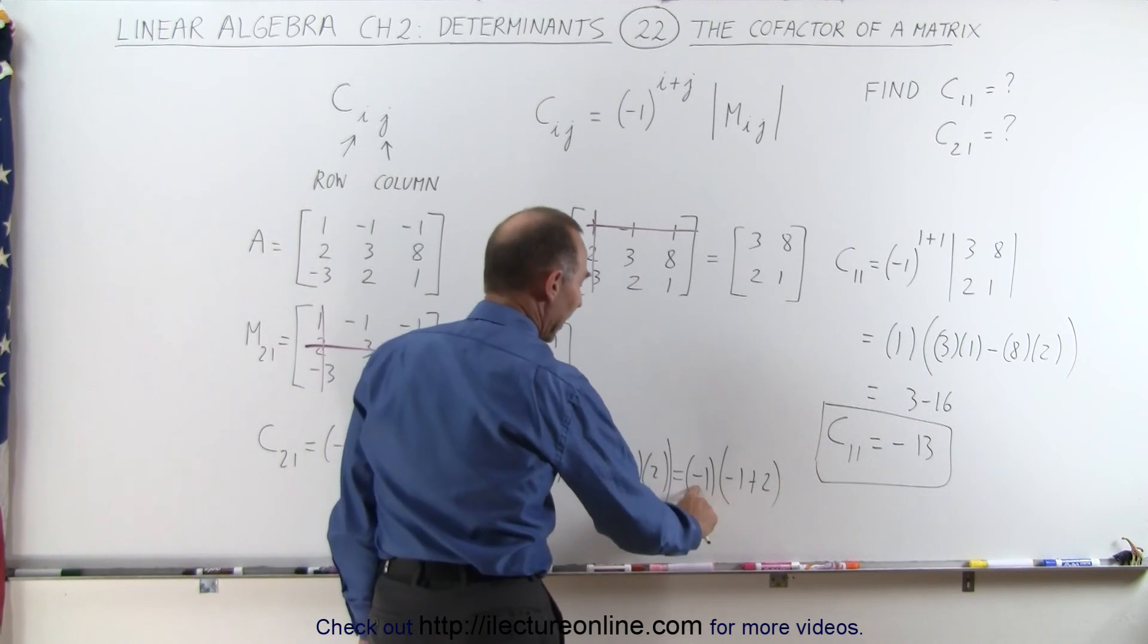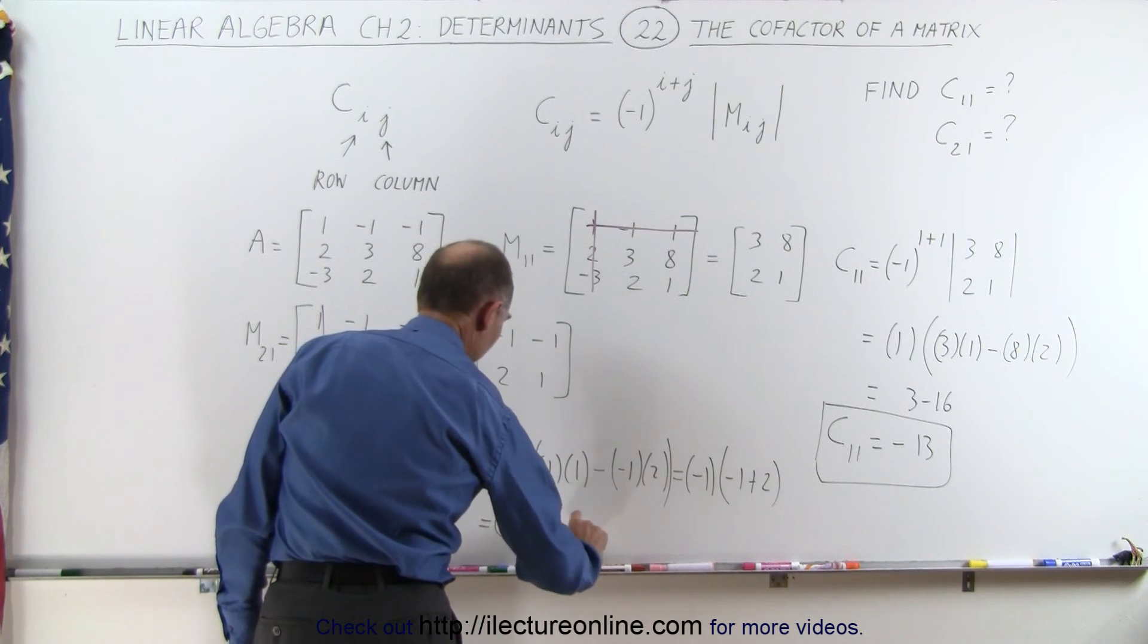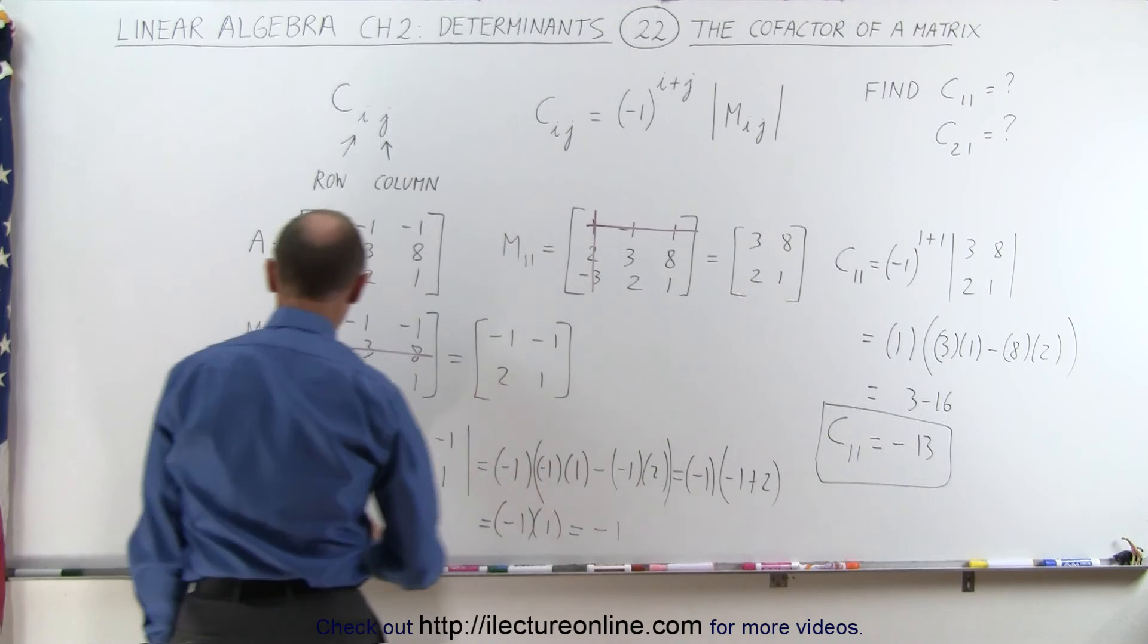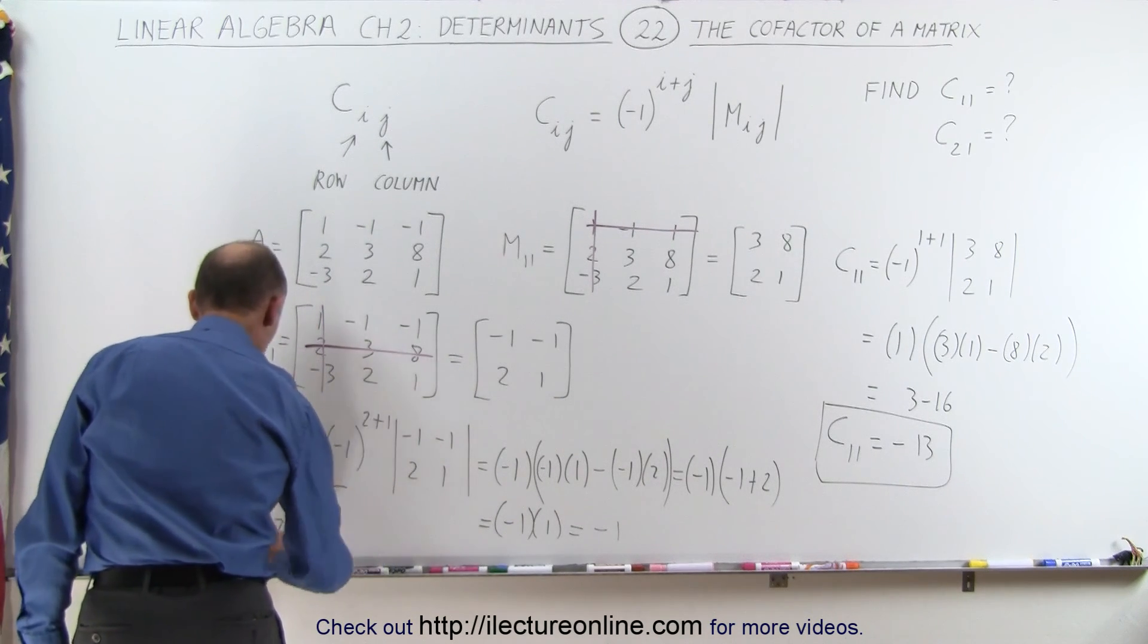So this becomes minus 1 times a plus 1, this equals minus 1 times a plus 1, which is a minus 1. In other words, c21 equals, in this case, a minus 1.